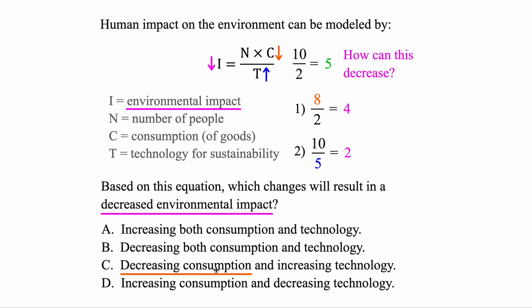It talks about decreasing consumption, that's what C stands for, we want that to decrease, that's correct. And it talks about increasing technology, or that value of T going up and increasing. And both of those things happening, it's going to result in the whole fraction becoming smaller, or result in a decreased environmental impact.